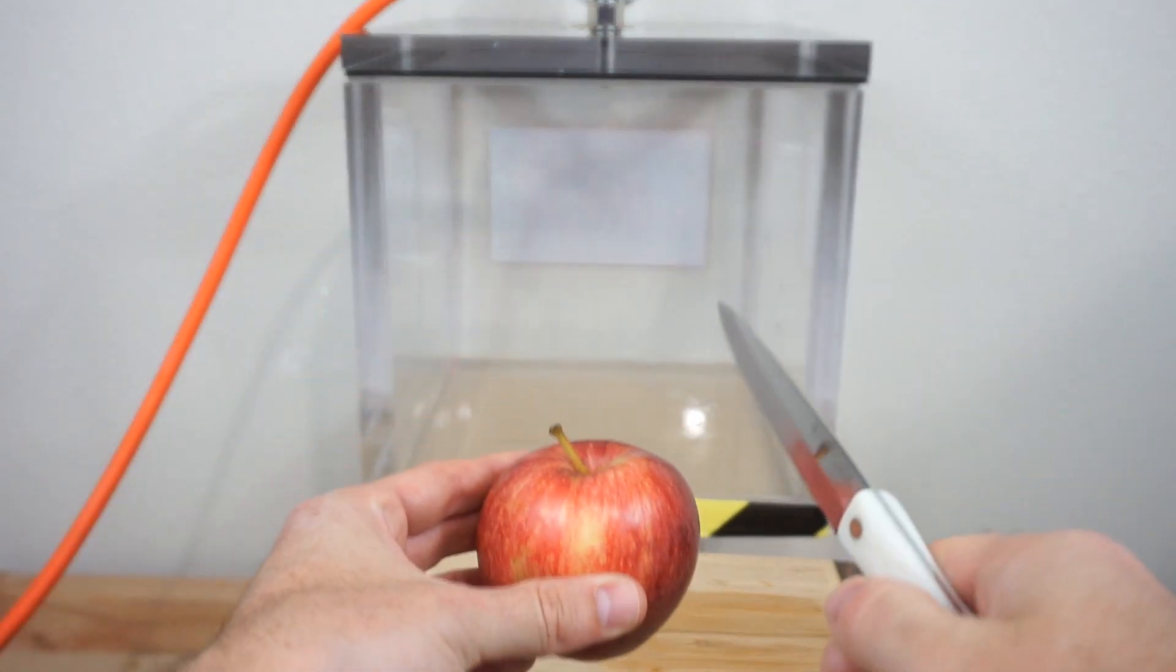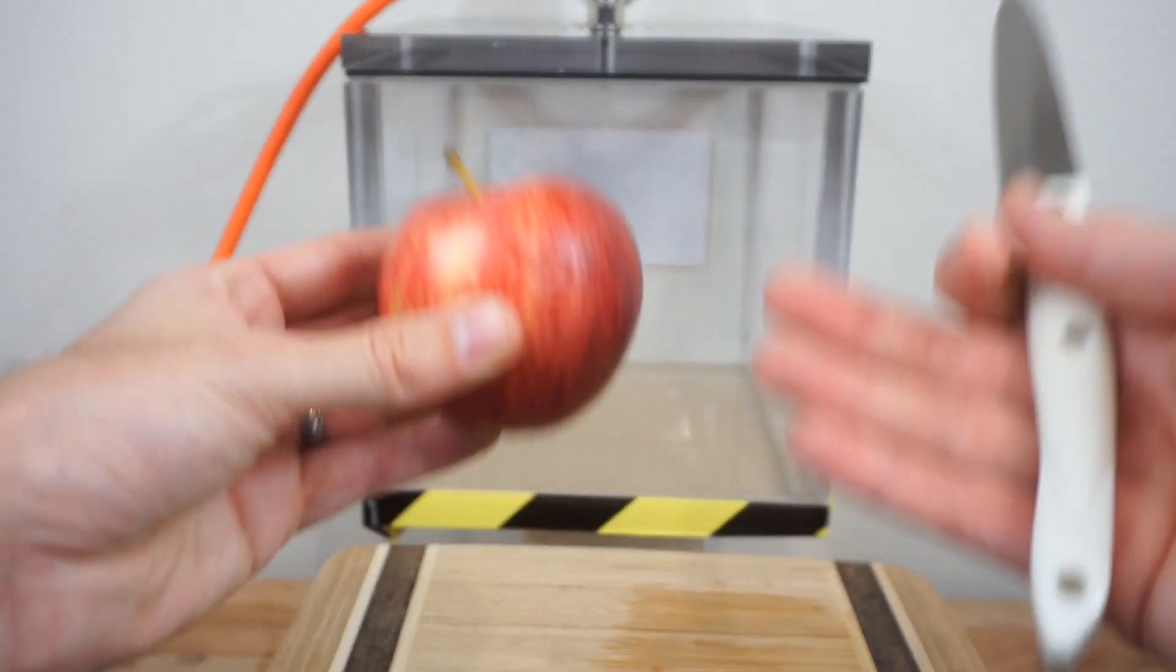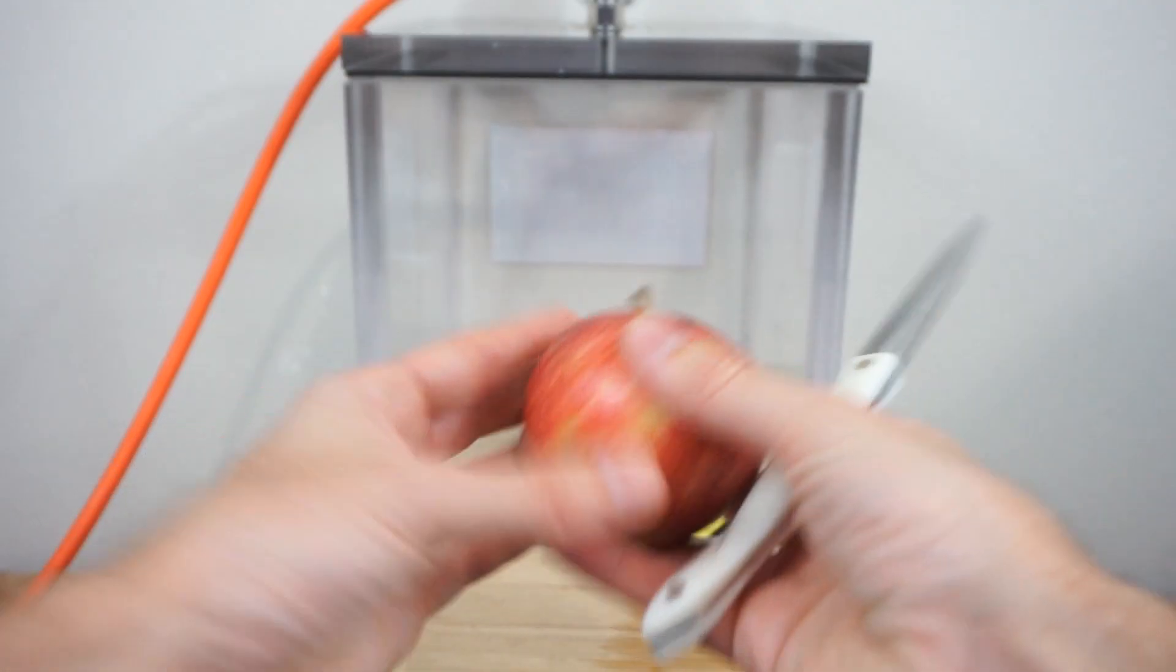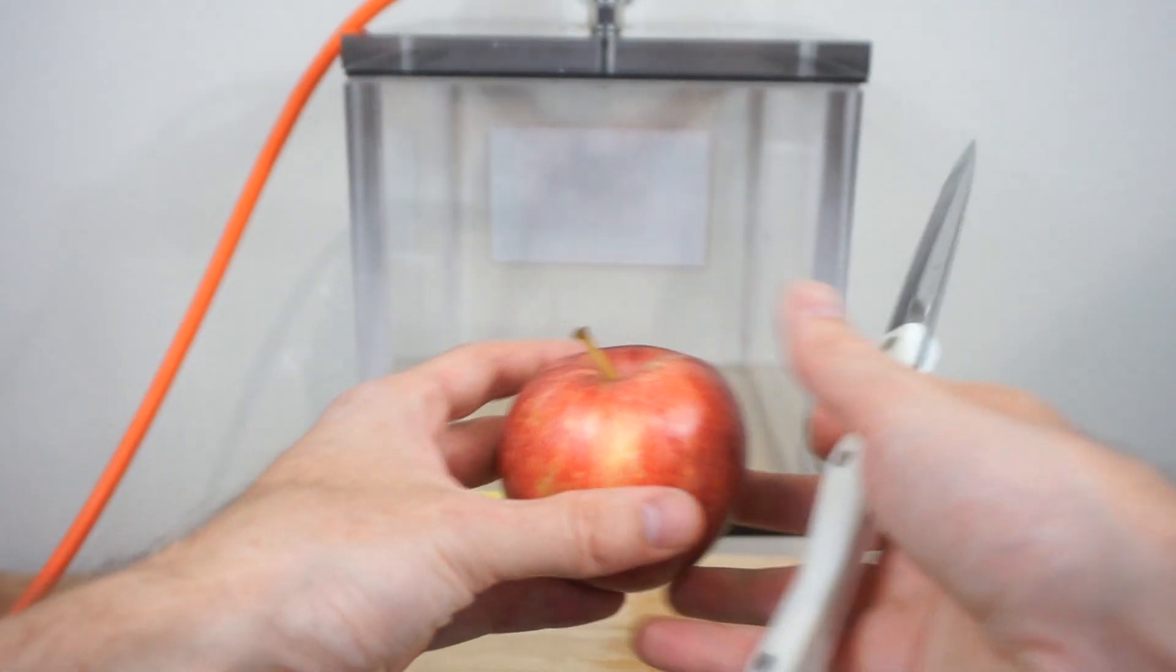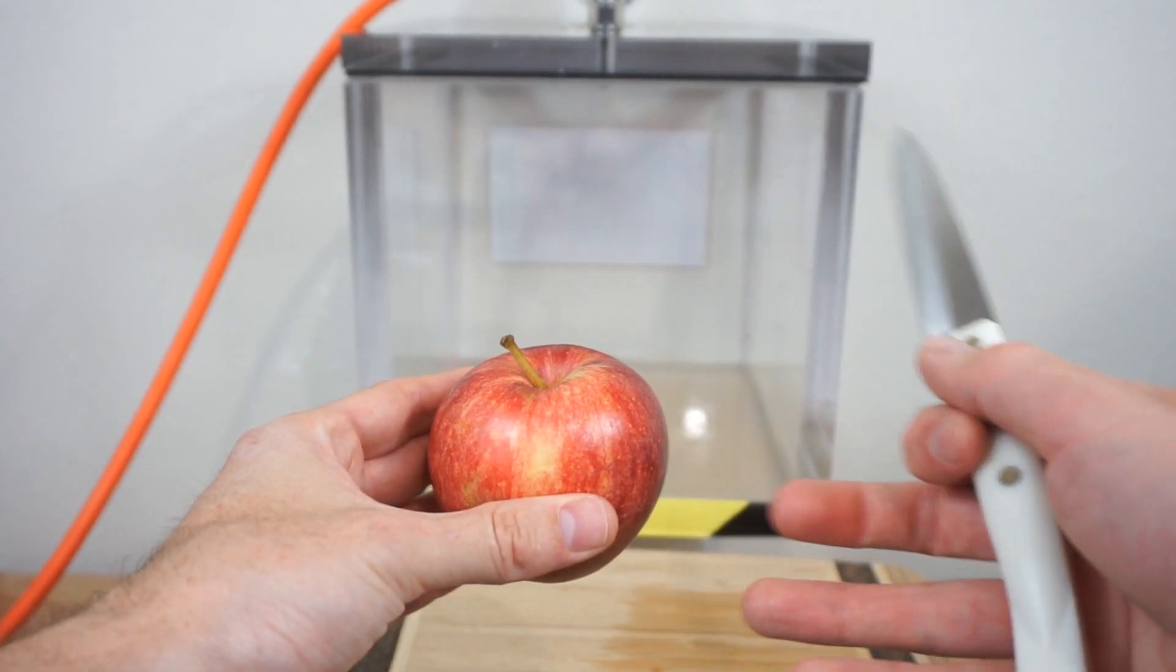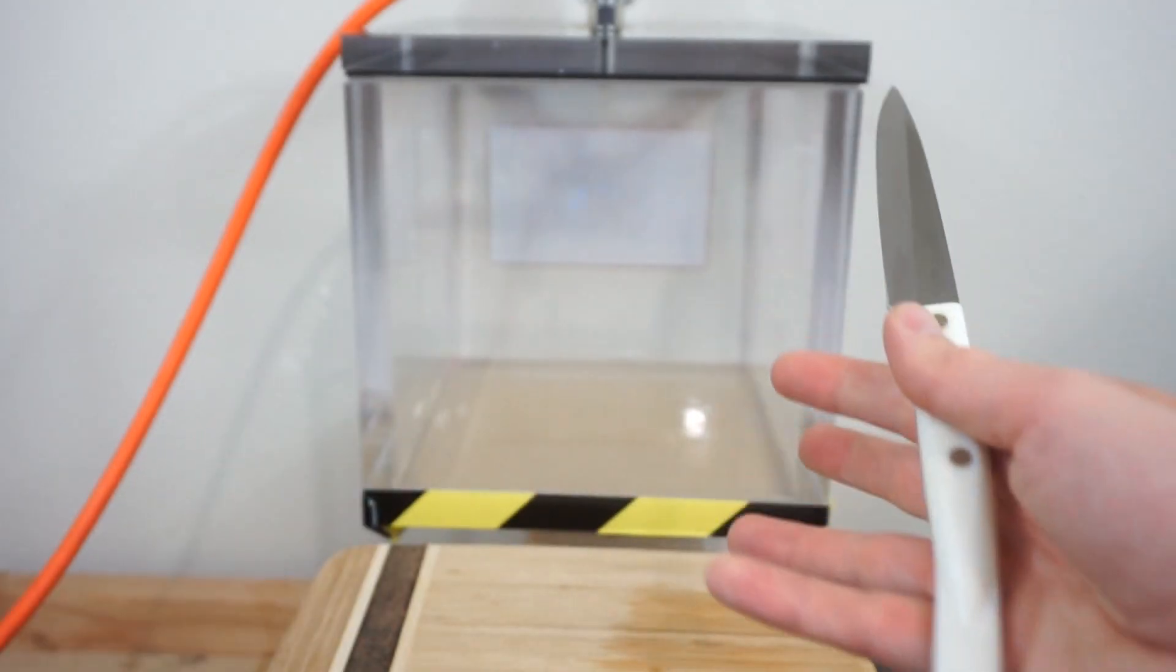So I'm going to cut it in half and I'm going to put a half in the vacuum chamber, the other half outside the vacuum chamber, leave them side by side, and then see what happens after a few minutes and see if either of them turn brown or which one browns more.